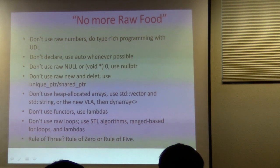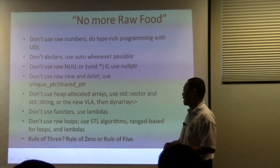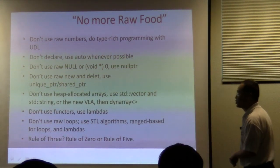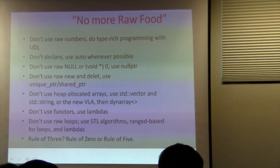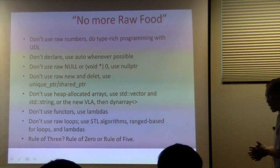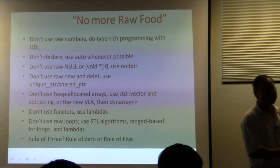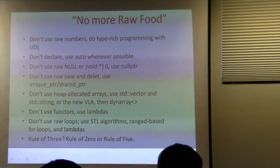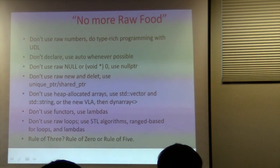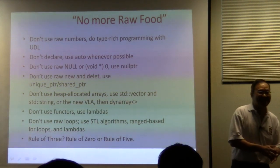Don't use functors — use lambdas, though that's not a generic rule; there are times when a functor may still be useful. Don't use raw loops — use STL algorithms, range-based for loops, and lambdas. Should you use for_each? Sometimes it is quite useful, especially with a lambda. Microsoft PPL uses that a fair bit. That debate is actually before my time.